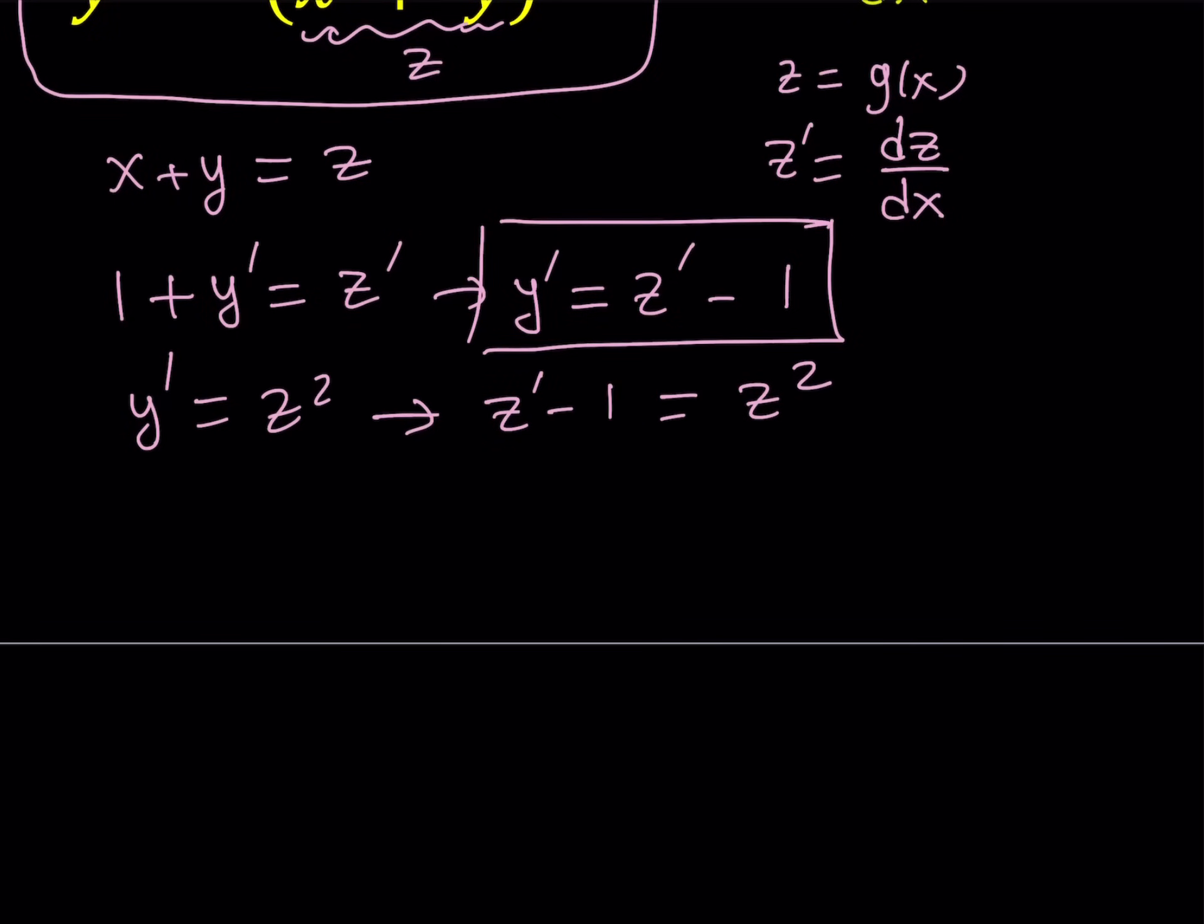We replace y prime with z prime minus one, and set it equal to z squared. So this is a very critical part of solving this problem. Let's go ahead and explain what this means. Let's isolate z prime here, add one to both sides, z prime equals z squared plus one.